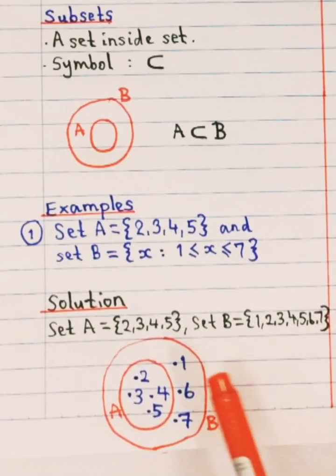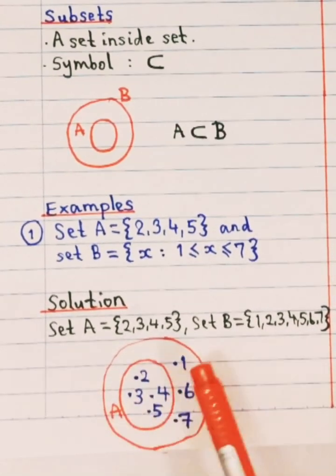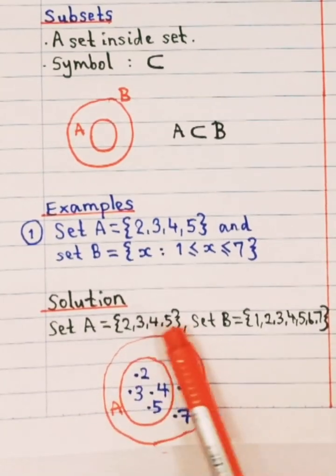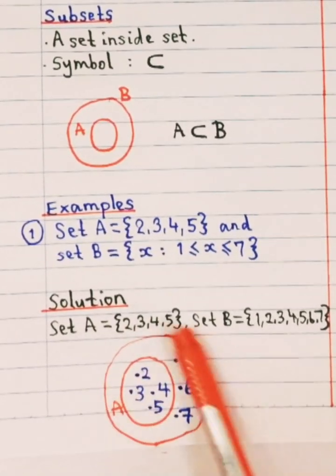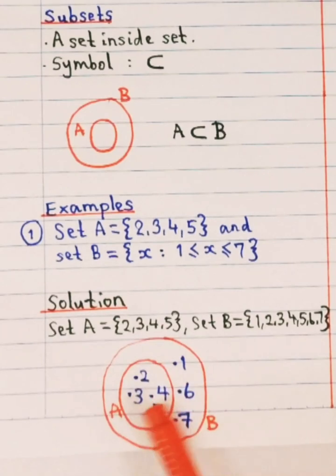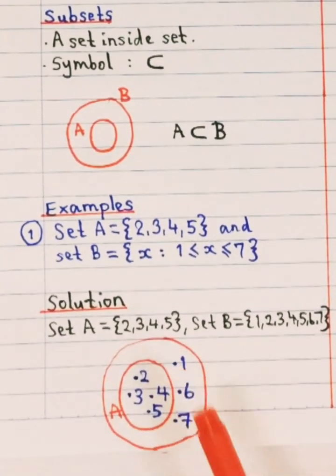So the set B will be, because whatever number left which is 1, 6 and 7, will be written outside your set A. So this is only set A and this is the whole thing, this is set B. So you have 1, 2, 3, 4, 5, 6 and 7. So this is how we represent subset. So A is a subset of B.